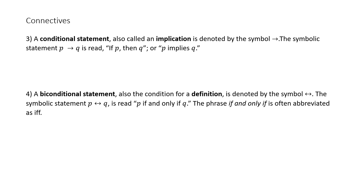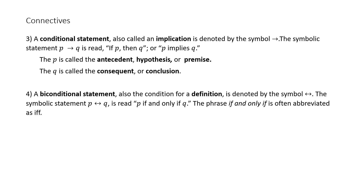A conditional statement is also called an implication and is denoted by a right-directed arrow (→). The symbolic statement P → Q is read 'if P then Q' or 'P implies Q.' The P is called the antecedent, hypothesis, or premise — those three words mean the same thing. The Q is called the consequent or conclusion — those two words mean the same thing.